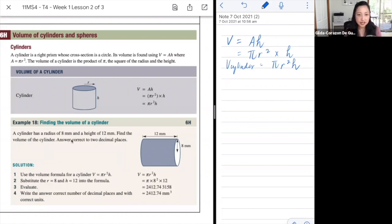It says here that a cylinder has a radius of 8 millimeters and a height of 12 millimeters. Find the volume of the cylinder. Answer correct to two decimal places. So pretty much straightforward here. You would need to have volume formula equals pi r squared h. Obviously, r here would be 8 and the height here would be 12. And if you plug in all those given, then using your calculator, you should get 2,412 point something, something.